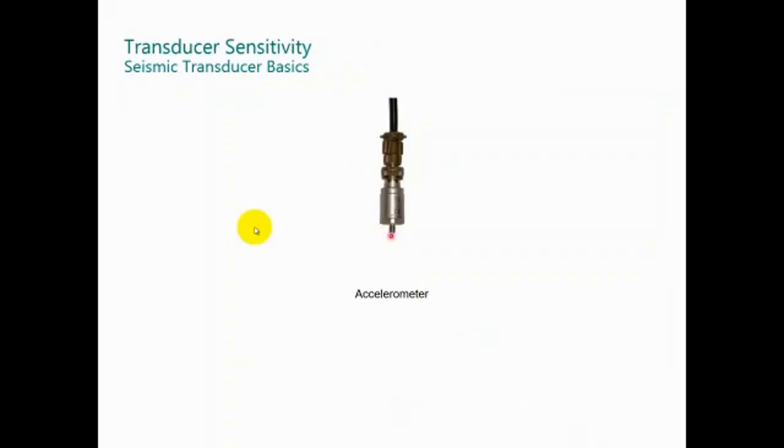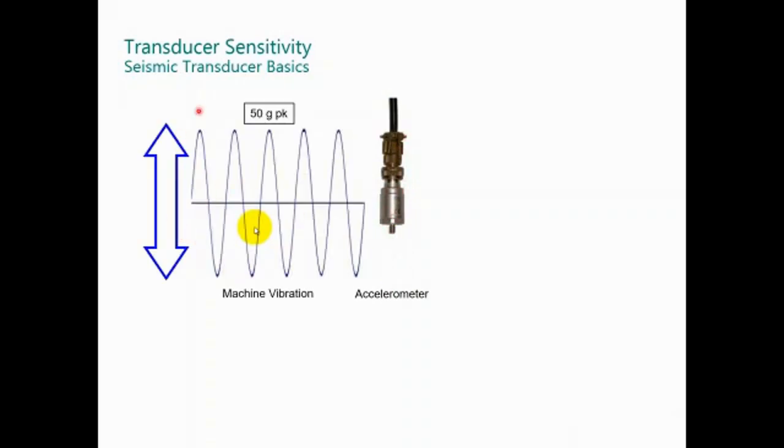First is the need to define the sensitive axis. Every transducer has a sensitive axis where they convert the vibration into electrical signal. This electrical signal must be proportional to the vibration. In this case, 50 g's peak is equal to 5 volts peak to peak.